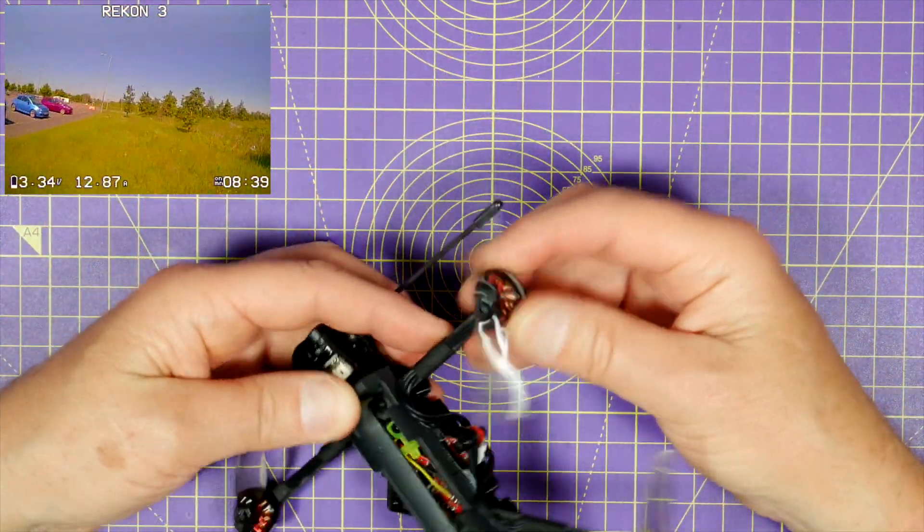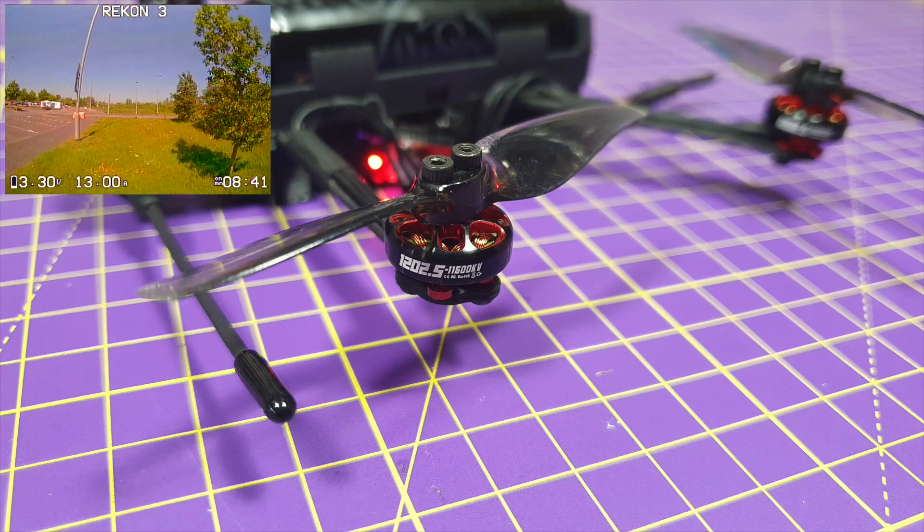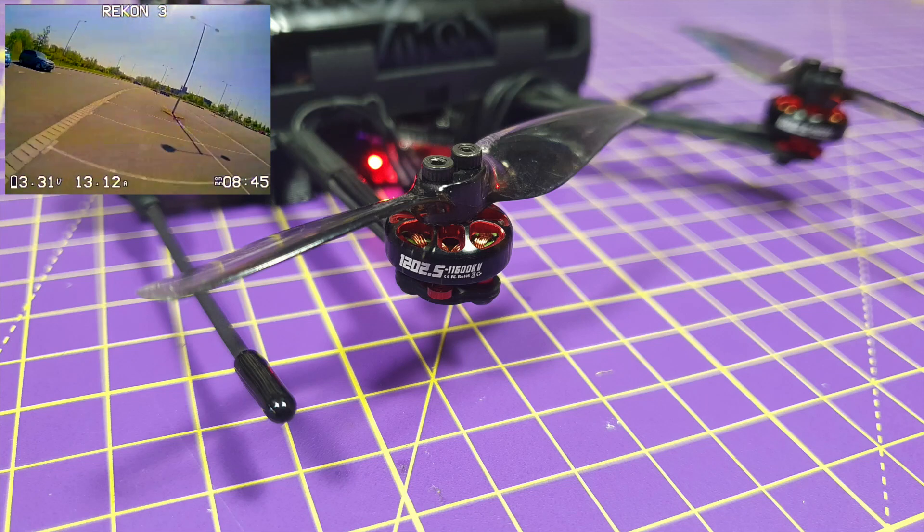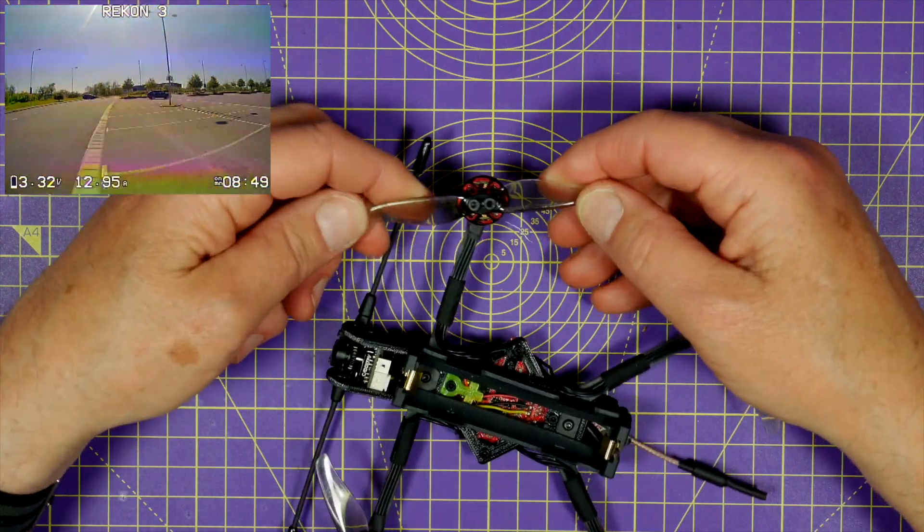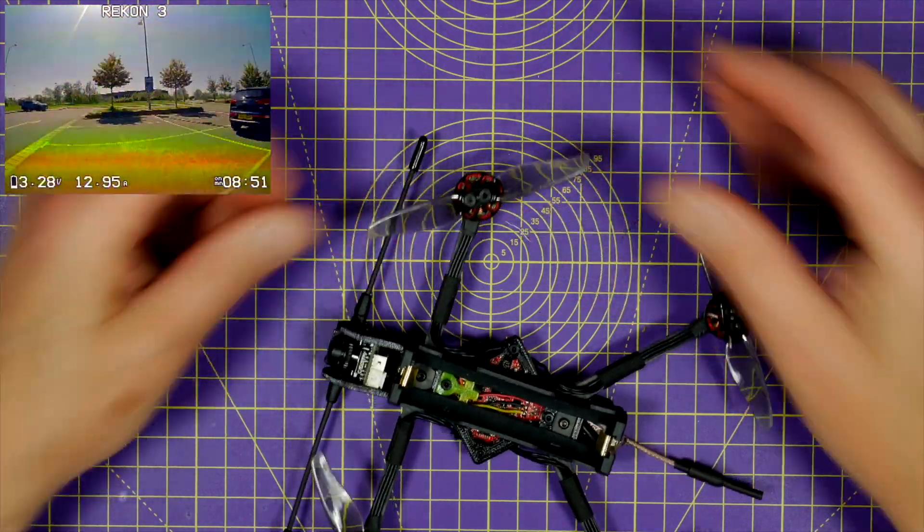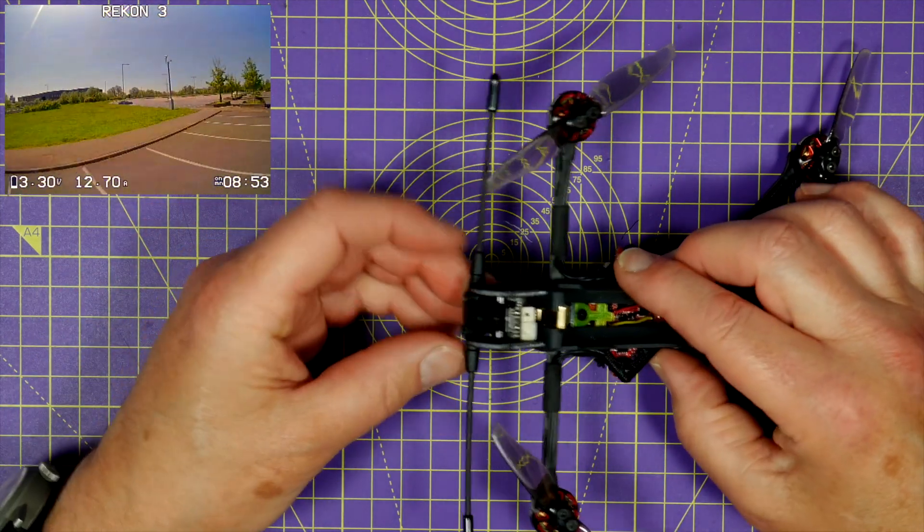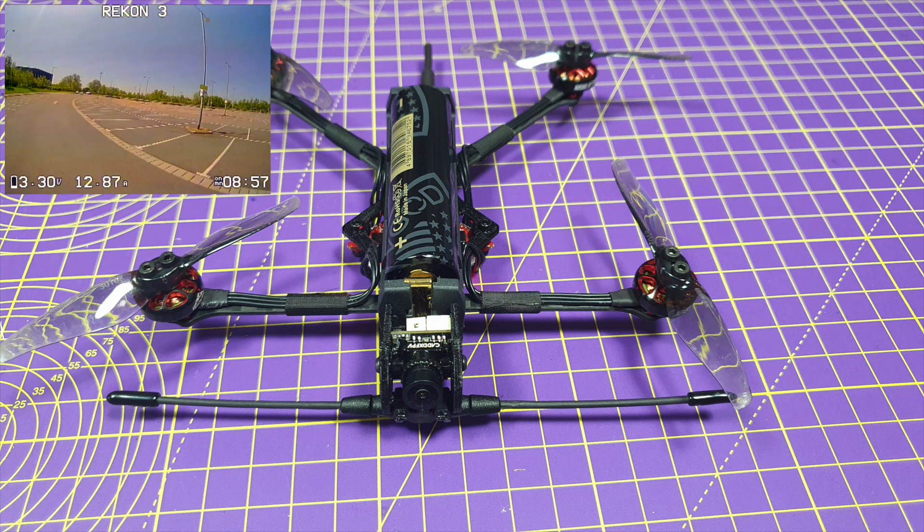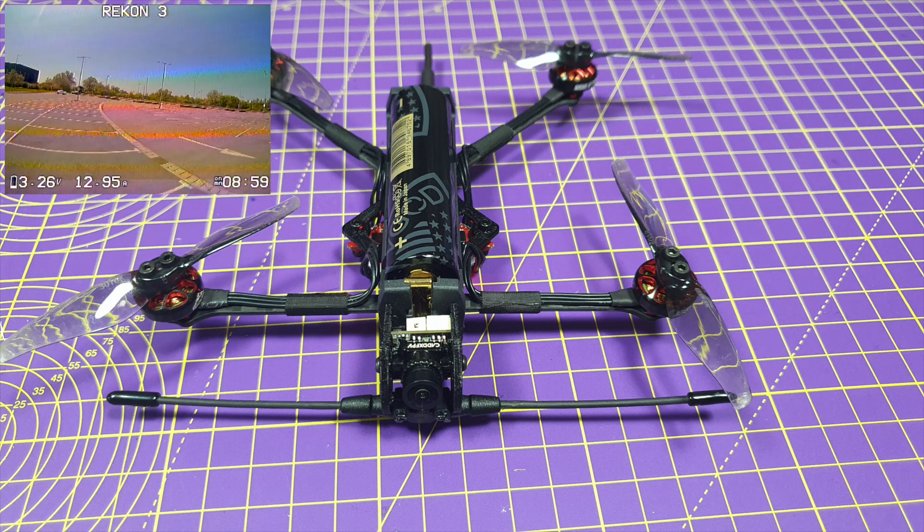These little motors are Rackon 1202.5 11,600KV, with these Gemfan 3018 3-inch 2-blade props. Very lightweight. And I ordered mine with a TBS Crossfire receiver with the Immortal T antenna mounted up front, which is the best place for it.